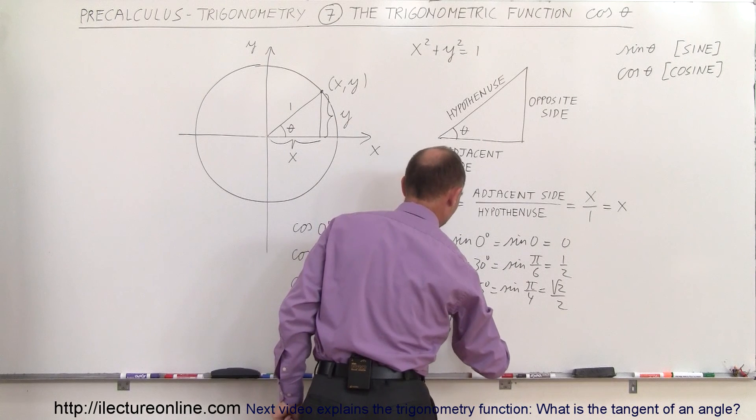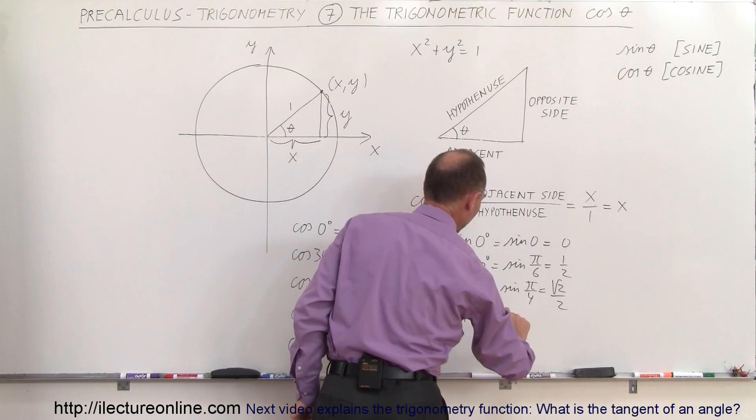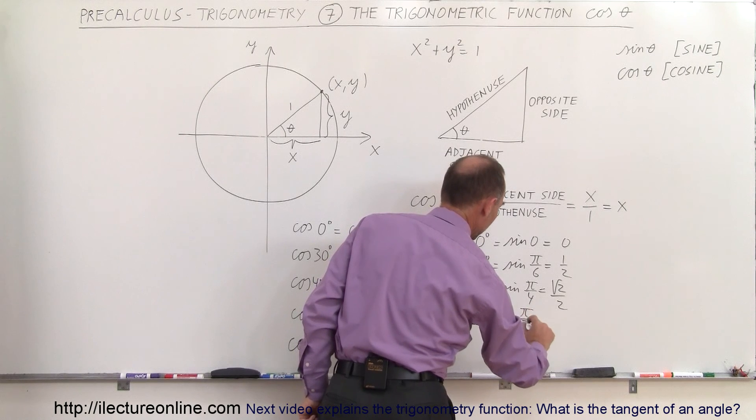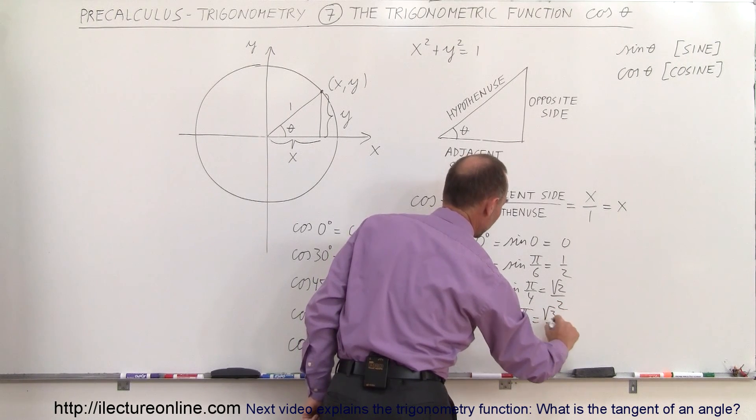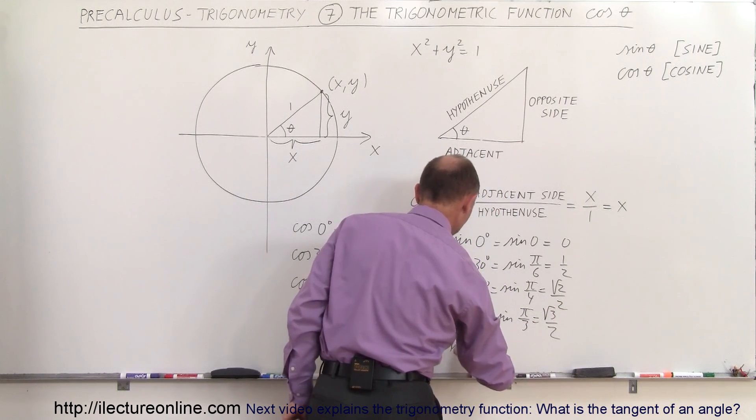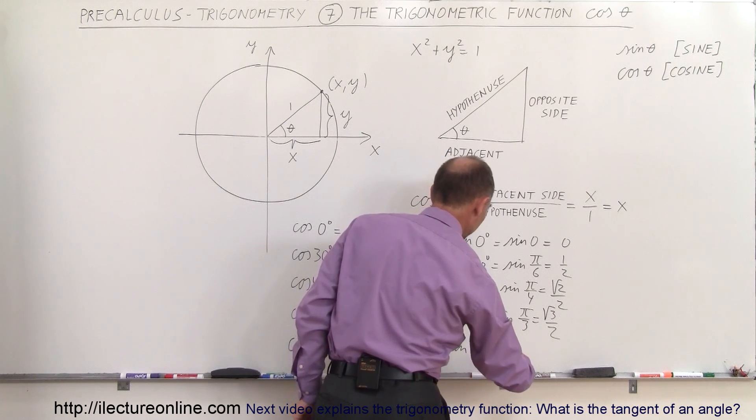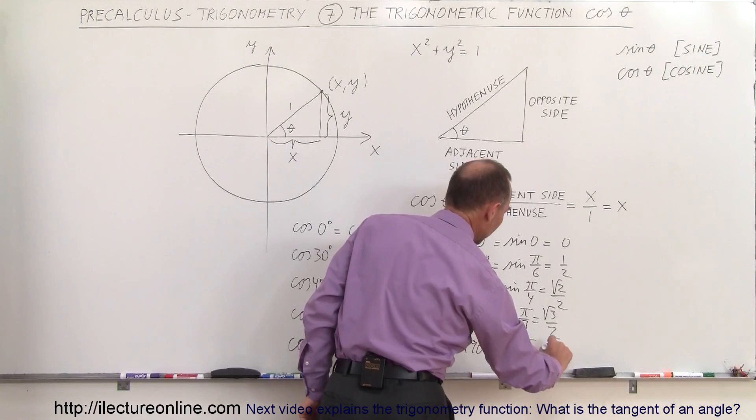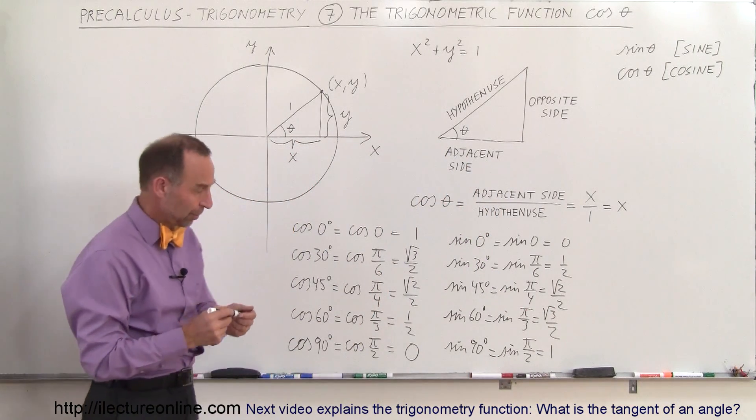The sine of 60 degrees, which is the sine of π over 3, which is equal to the square root of 3 over 2. And finally, the sine of 90 degrees is equal to the sine of π over 2, which is equal to 1. You see how the numbers line up.